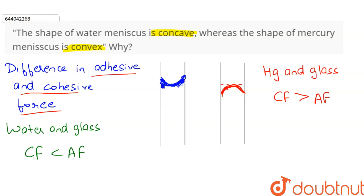On the other hand, in case of mercury, the cohesive force is greater, so the mercury particles near the tube interface are pulled down by the mercury particles in the innermost part. Therefore we get a convex meniscus.